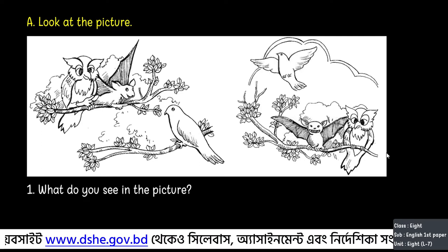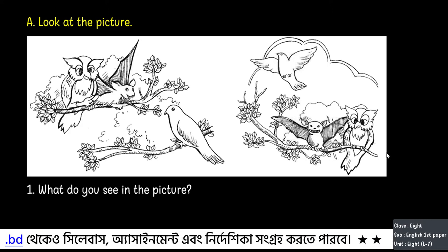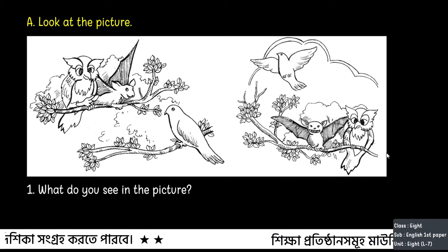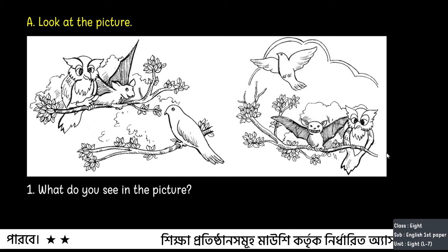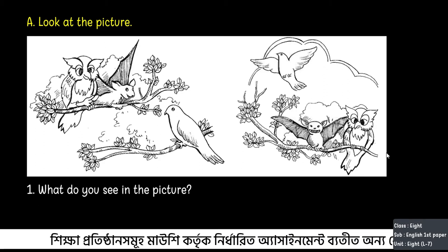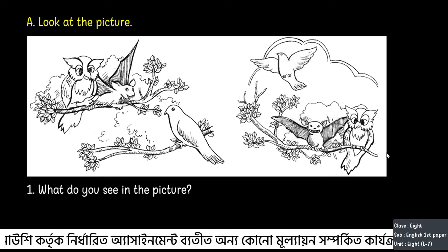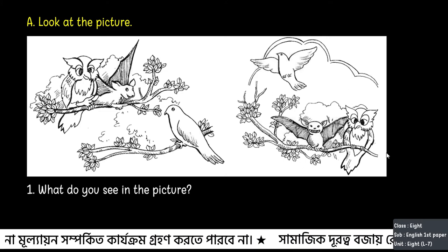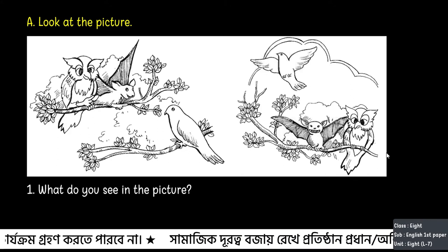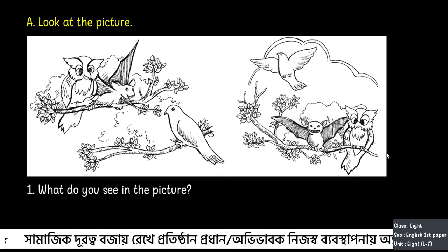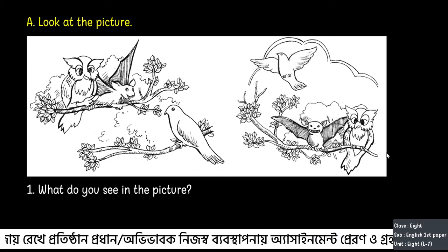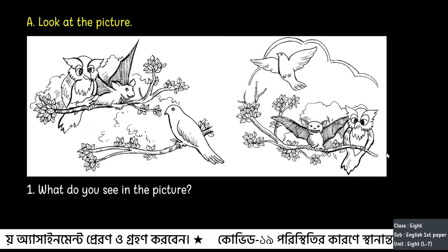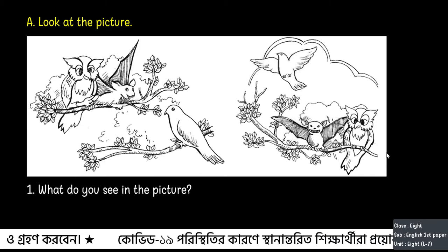So, what do you see in the picture? We actually see two pictures of a bat, an owl and a dove in different positions. In the first picture, we can see a bat and an owl sitting together on a tree branch. There is a dove also, sitting on another branch of the tree, face to face with the other two. In the second picture, the dove is flying away while the other two are sitting together. I wonder what might have happened — we will find that out in today's class.